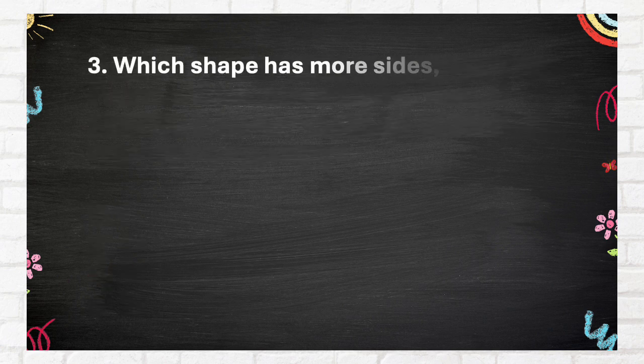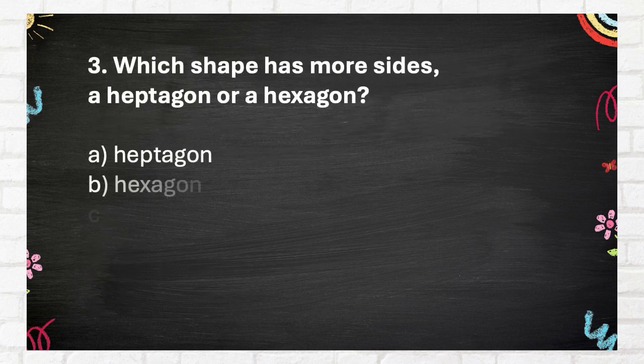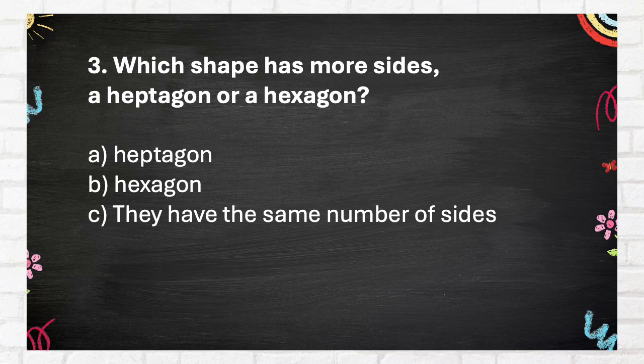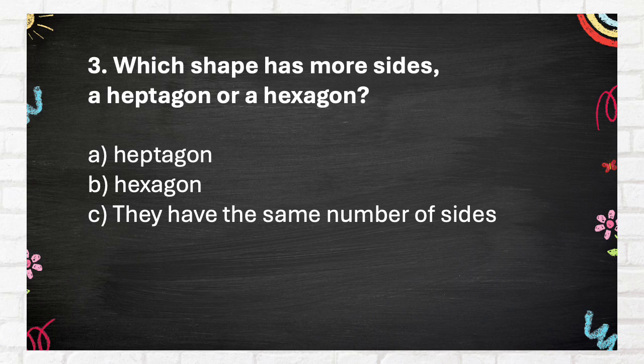Question number 3. Which shape has more sides, a heptagon or a hexagon? A heptagon, B hexagon, C they have the same number of sides.